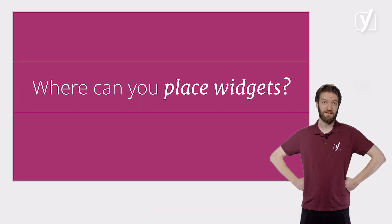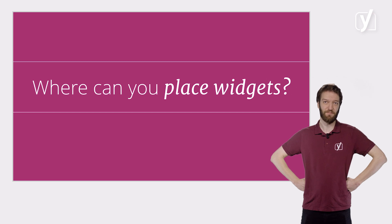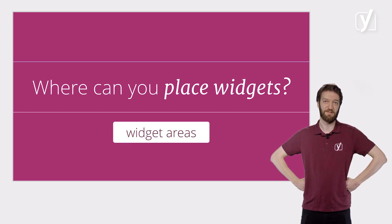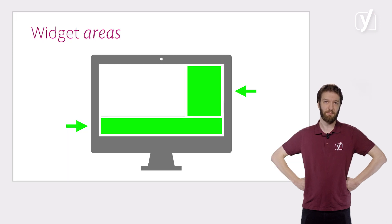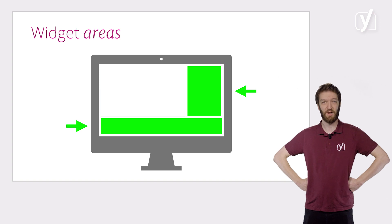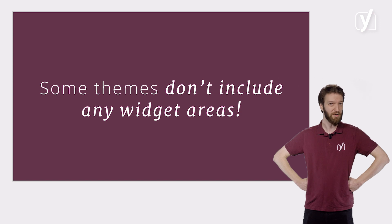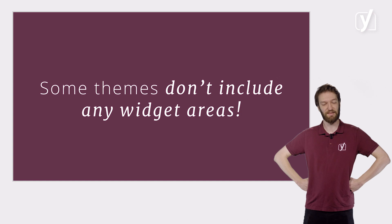So where can you place these widgets on your site? You can't just randomly put widgets anywhere. Widgets can only be put into so-called widget areas. These areas are defined by your theme and are usually located in the sidebar and the footer of your site, which also means that widgets often appear site-wide, so across several pages. However, some themes don't include any widget areas, so if you want to use widgets, it's wise to check this when selecting a theme.